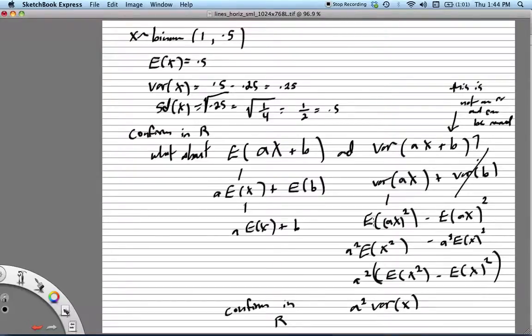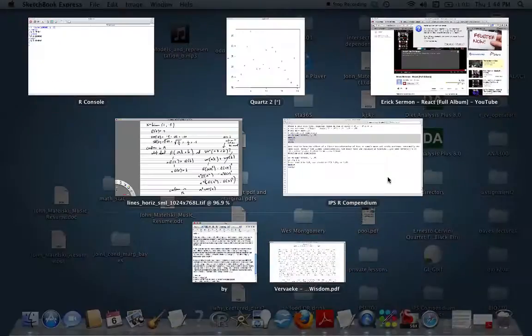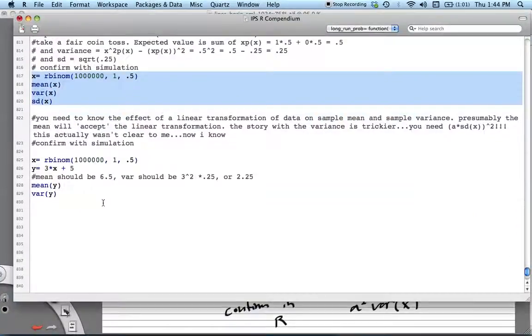You can just go through with the definition of variance and expected value using the same rules we used over here. Compute that the a squared will pop out of both terms, and you'll get a squared times the variance of X. We want to hop into R and confirm this.